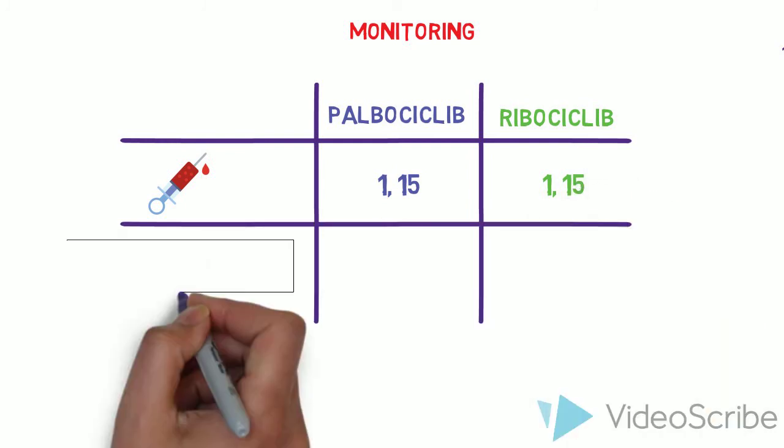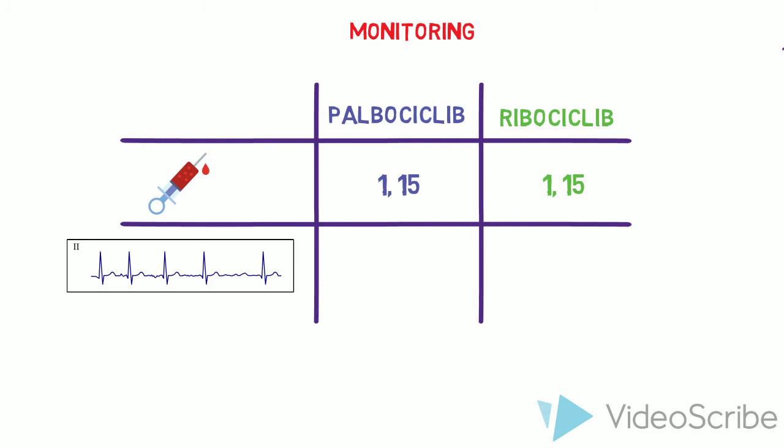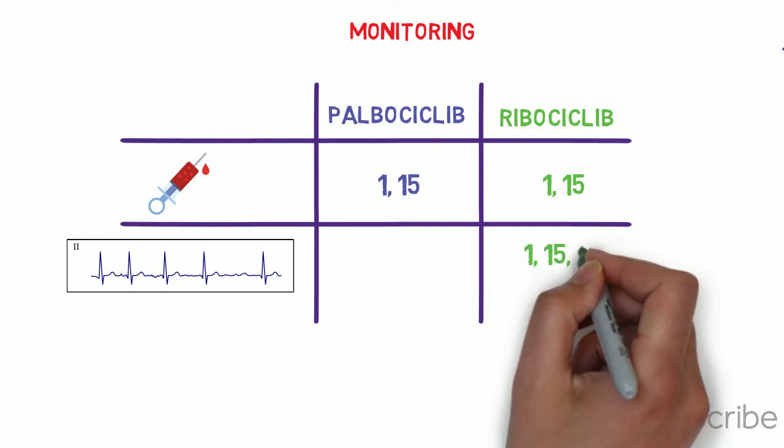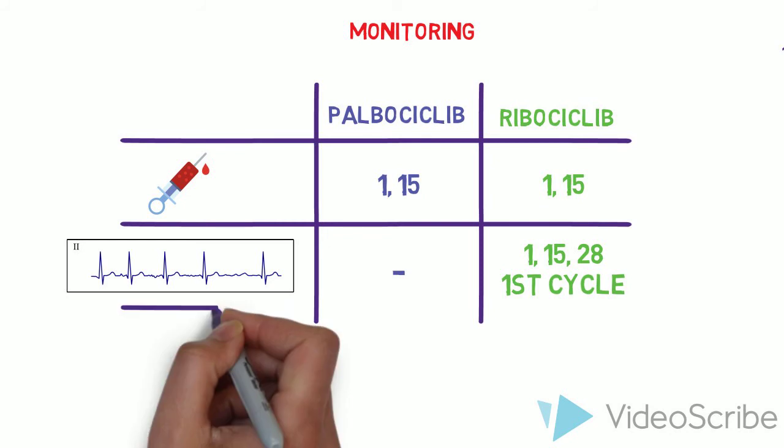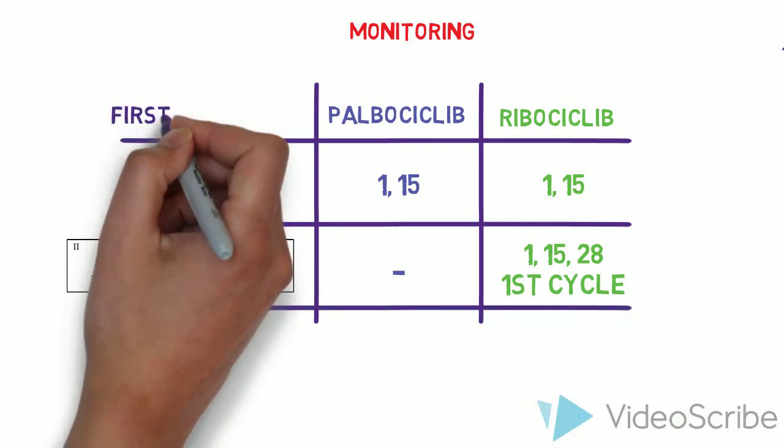In addition, ribocyclib required ECG monitoring to check for QTC interval prolongation during the first cycle. Novartis recommend using the Fridericcia formula to correct the QT interval rather than the Bazitz formula that's most commonly used in the NHS.